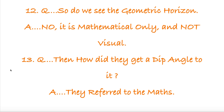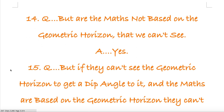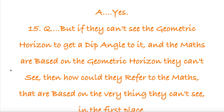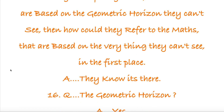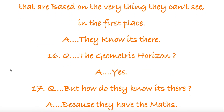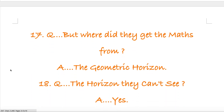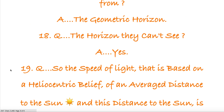Then how did they get a dip angle to it? They refer to the maths. But are the maths not based on the geometric horizon that we can't see? Yes. But if they can't see the geometric horizon to get a dip angle to it, and the maths are based on the geometric horizon they can't see, then how could they refer to the maths based on the very thing they can't see in the first place? They know it's there — the geometric horizon. But how do they know it's there? Because they have the maths. But where did they get the maths from? The geometric horizon — the horizon they can't see.